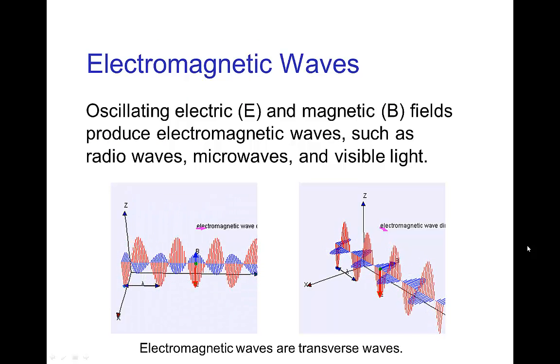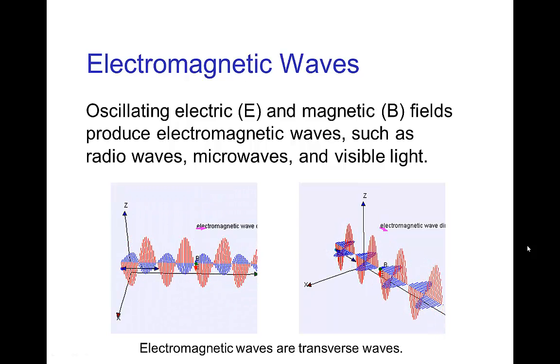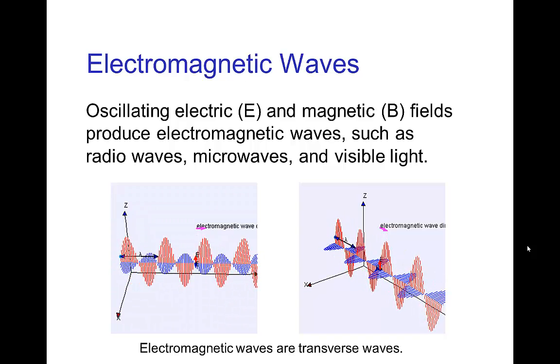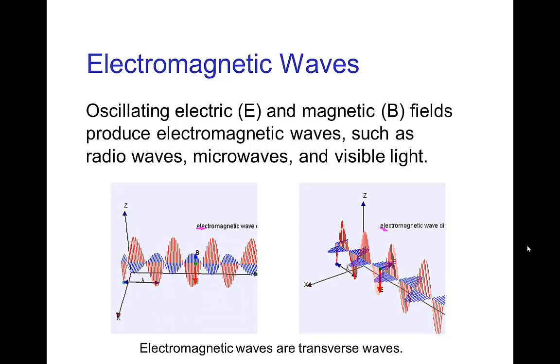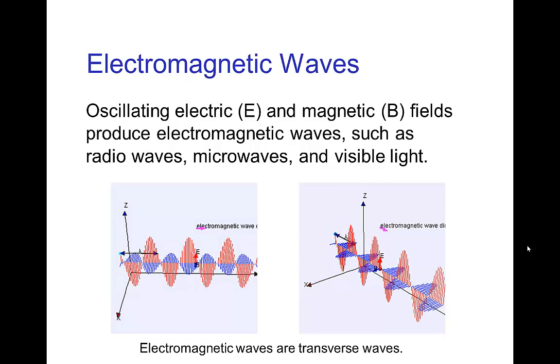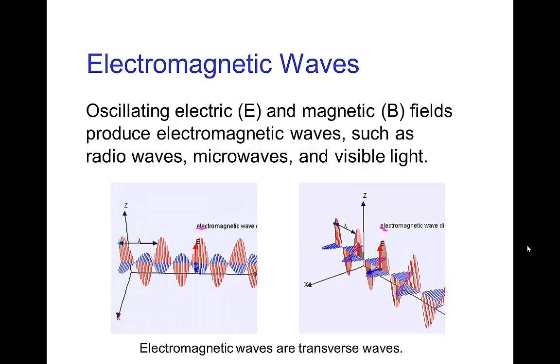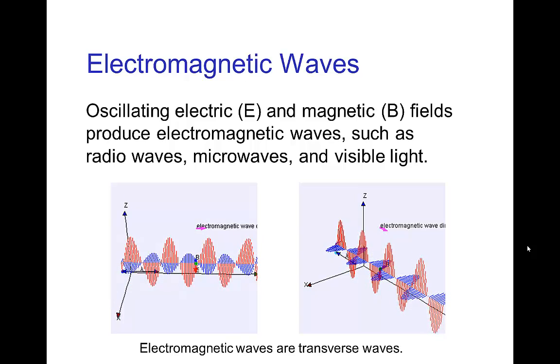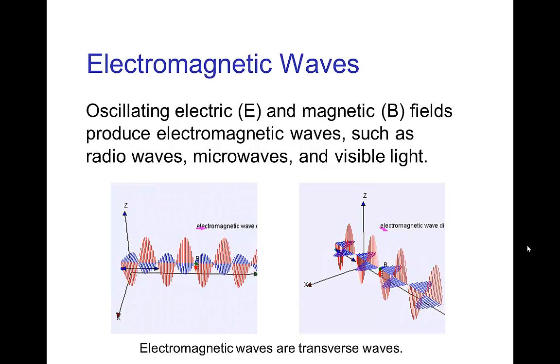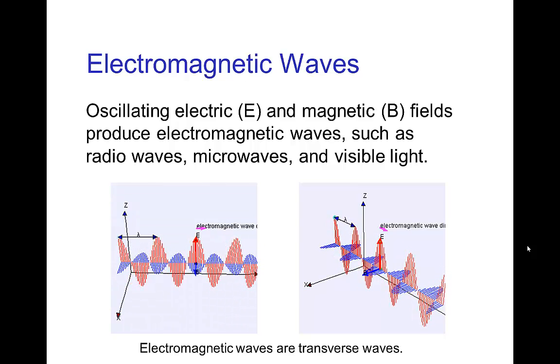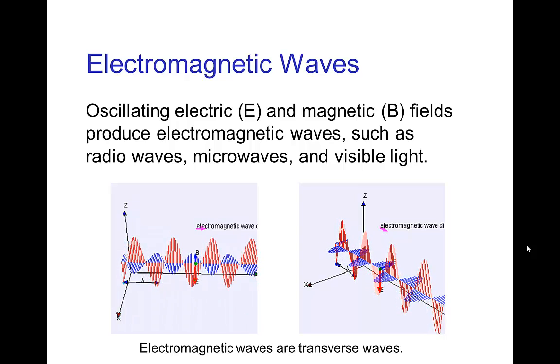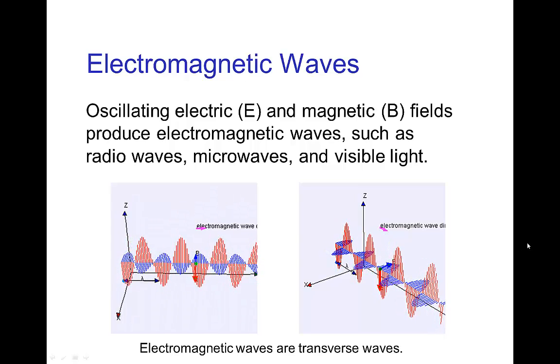Now finally, the most interesting connection between electricity and magnetism is that when we have oscillating electric and magnetic fields, this actually propagates as a wave. This is called electromagnetic waves. And examples of electromagnetic waves are radio waves, microwaves, infrared, ultraviolet, and most important to us, visible light. So these are transverse waves created by oscillating electric and magnetic fields.